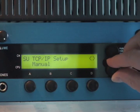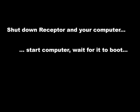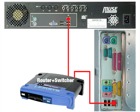Set Receptor to Crossover mode, shut down Receptor and your computer, and then turn on your computer, wait for it to boot completely, and then turn on Receptor.